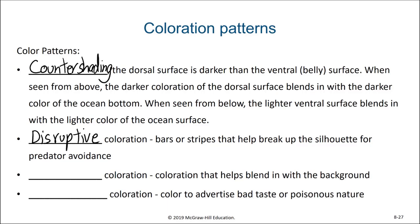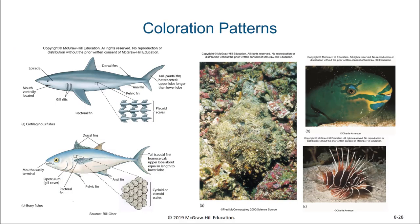A more striking visual pattern is disruptive coloration, which could include bars or stripes that help break up the silhouette of the fish for predator avoidance. There is cryptic coloration, which is used for camouflage and blending into the background, whereas warning coloration is more an advertising of one's presence to let predators know that you are poisonous. The shark and tuna we had seen earlier has that countershading with a more darkly colored dorsal surface and a lightly colored undersurface.